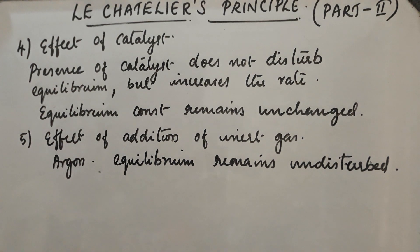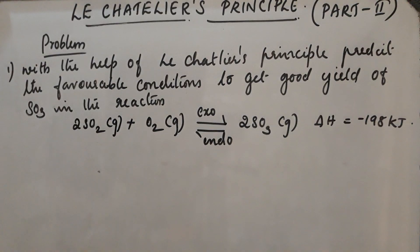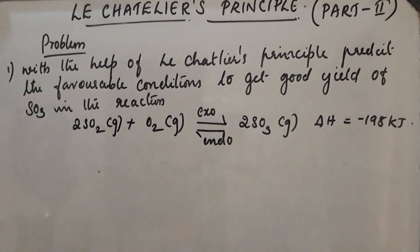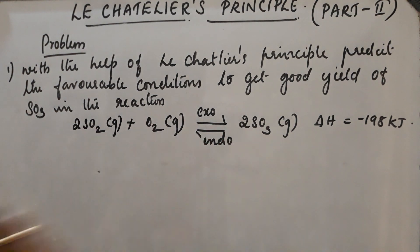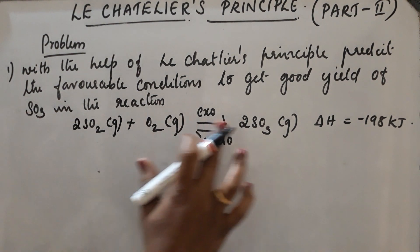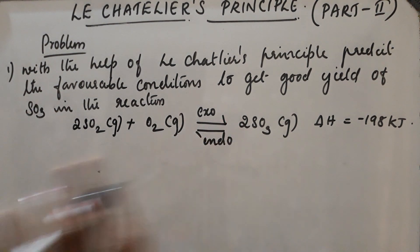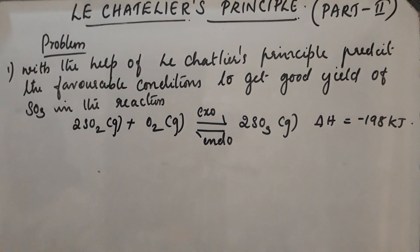This much about Le Chatelier's Principle. Now let us do one problem based on this. With the help of Le Chatelier's Principle, predict the favorable conditions to get a good yield of SO₃ in the reaction: 2SO₂ + O₂ ⇌ 2SO₃, where the forward reaction is exothermic and the backward reaction is endothermic.